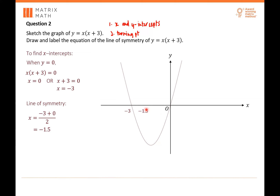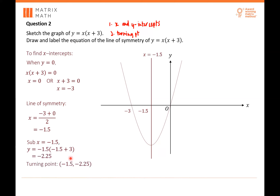So X equals negative 1.5 is the line of symmetry — draw it in and label the equation. To find the turning point, sub X equals negative 1.5 back into your equation to get the Y value. Your Y should be negative 2.25. So the turning point is (negative 1.5, negative 2.25). Plot this in and label your graph Y equals X times (X plus 3).